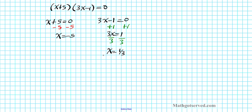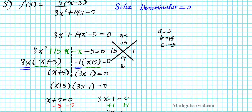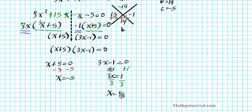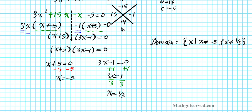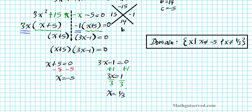These are the values that cause our function to have an undefined output, so they must be excluded from the domain. The domain of the function is the set of all x's such that x is not equal to negative 5 and x is not equal to 1 third. That is your final result.